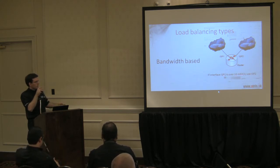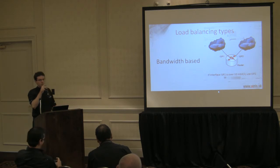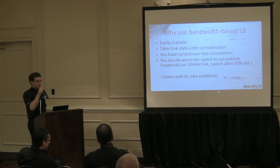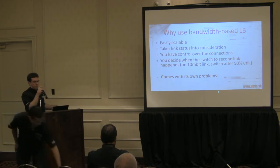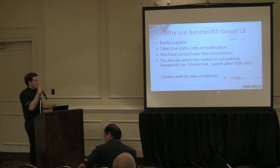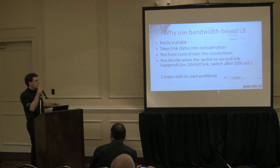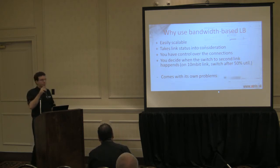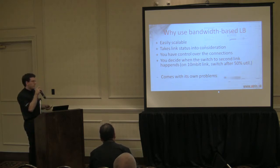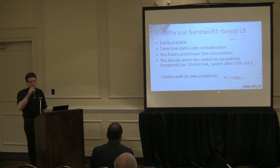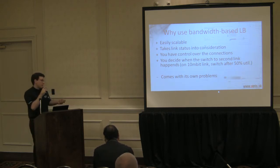It's really simple: if the interface ISP1 is over 10 megabits, use ISP2. But if there is free capacity on the ISP1 link, use ISP1. It's very well scalable because you can add links and it just works. It takes link status into consideration, so it only routes connections out of the second ISP if the first ISP is already overloaded. You have partial control over your connections because you know connections are going out ISP1 until it's at its limits. You can actually decide when you want to switch to the second link — for example, switch after the first ISP is at 50% utilization.